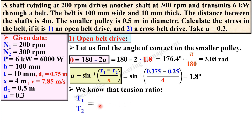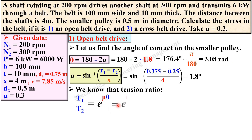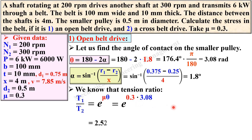The tension ratio is t1/t2 = e^(μθ). We have both theta and mu, so putting in the values and simplifying, we get the tension ratio t1/t2 = 2.52. Let this be equation number 1.